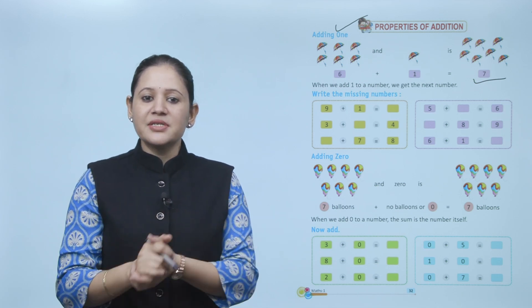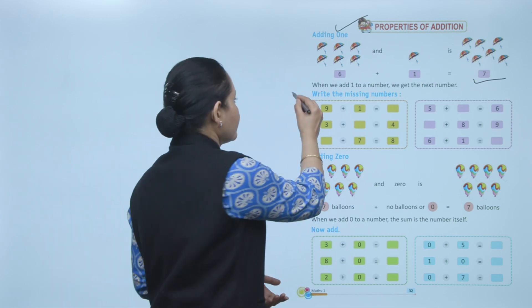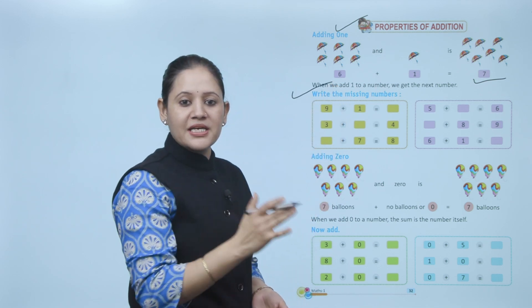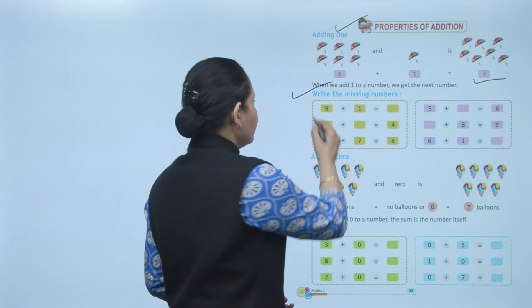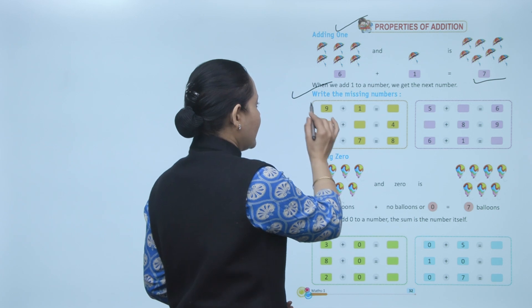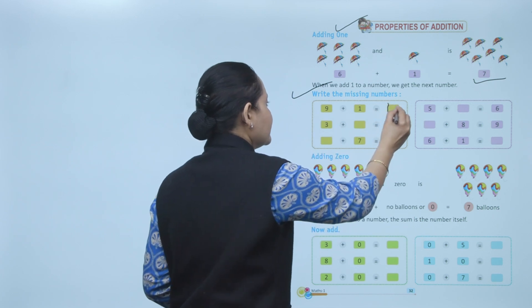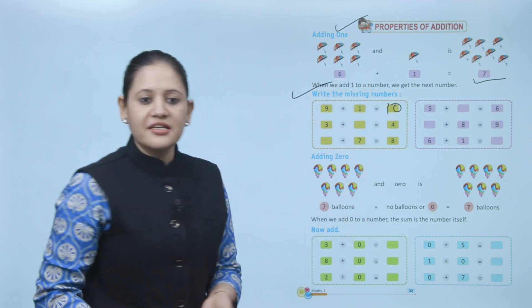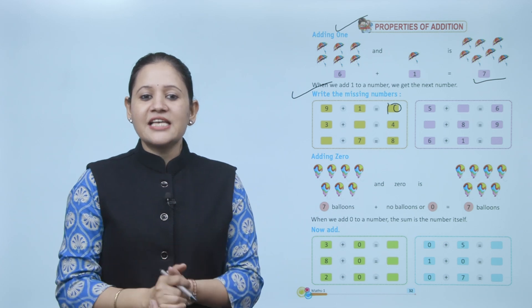Write the missing numbers. Nine plus one — we are adding one to nine, so we will get the next number, that is number 10.